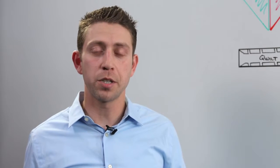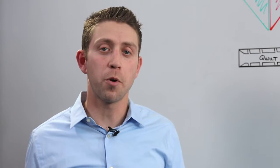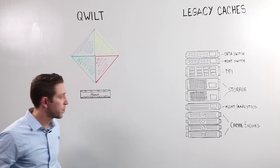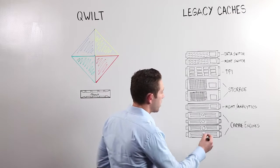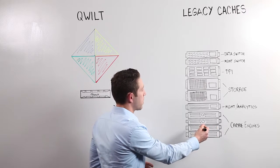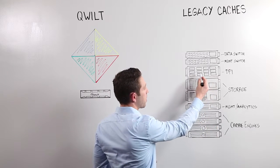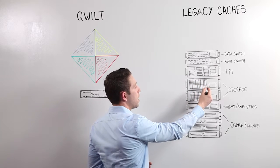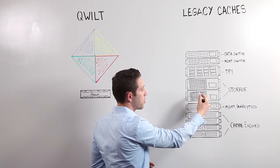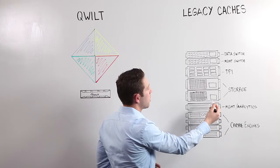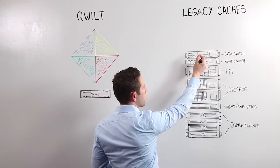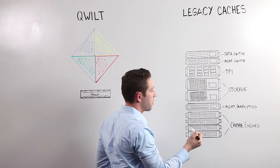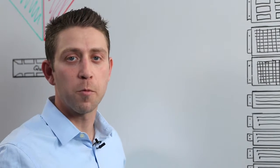They're typically built out of a bunch of third-party different point products bolted to work together. For example, in addition to the actual cache engines, legacy systems typically need a DPI to classify some of its traffic, external storage enclosures to store the cache content, and don't forget about all the additional switching and management devices to make everything work together.